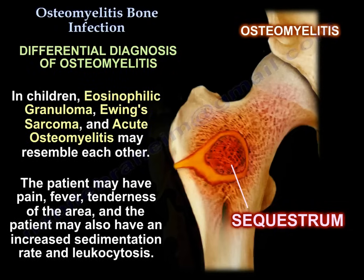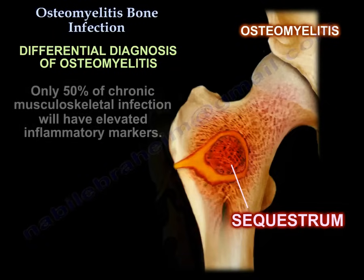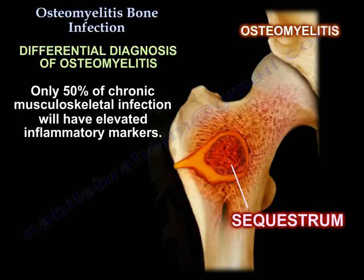In children, eosinophilic granuloma, Ewing's sarcoma, and acute osteomyelitis may resemble each other. Patients may present with pain, fever, tenderness of the area, increased sedimentation rate, and leukocytosis. Osteomyelitis can also be confused with a healing fracture or a benign or malignant tumor — sometimes a biopsy is necessary for diagnosis. Only 50% of chronic musculoskeletal infections will have elevated inflammatory markers.